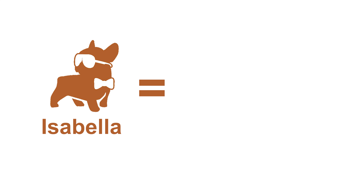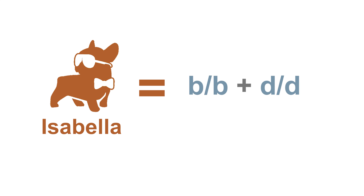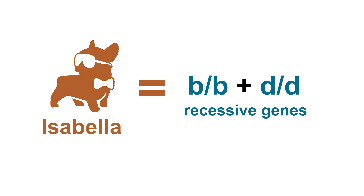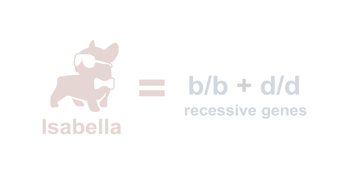An Isabella dog, which is a diluted version of brown, requires two copies of both the recessive genes: BB brown and DD dilute, both in lowercase. If you need more information on the difference between dominant and recessive genes, we have a video about that on our channel.